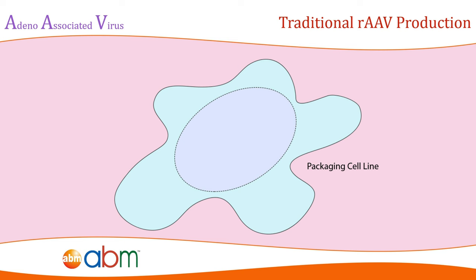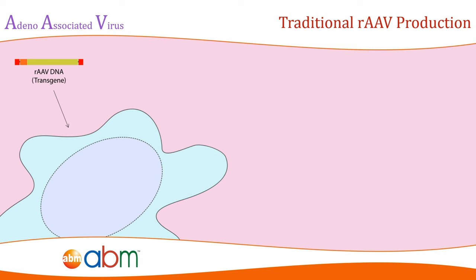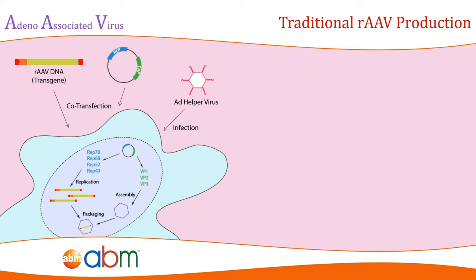It involved a vector plasmid containing the transgene enclosed by inverted terminal repeats, or ITRs, and a complementary plasmid having the necessary rep and cap genes of AAV. Since AAV requires the presence of a helper virus to replicate, the packaging cell line is also infected with adenovirus at the time of plasmid transfection. Once recombinant AAV is made, the contaminating adenovirus is usually destroyed by heat inactivation.